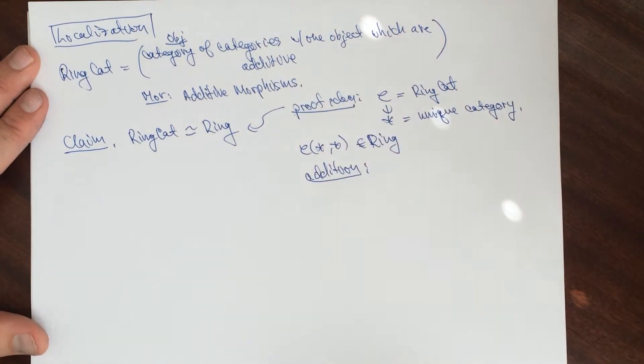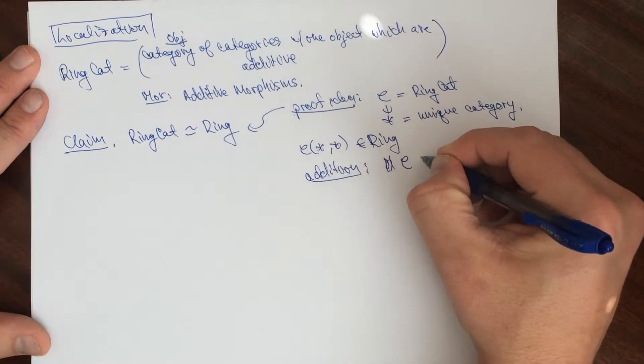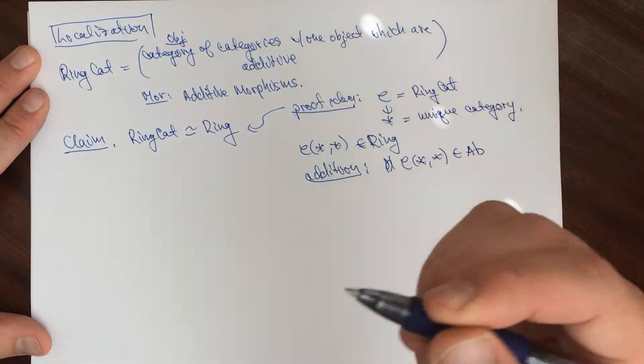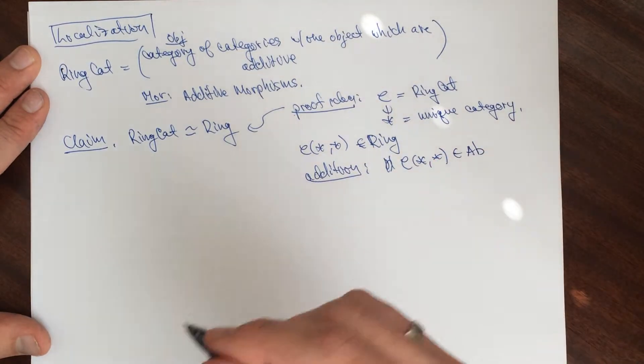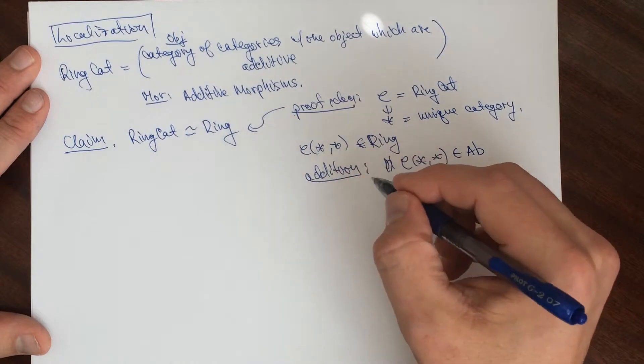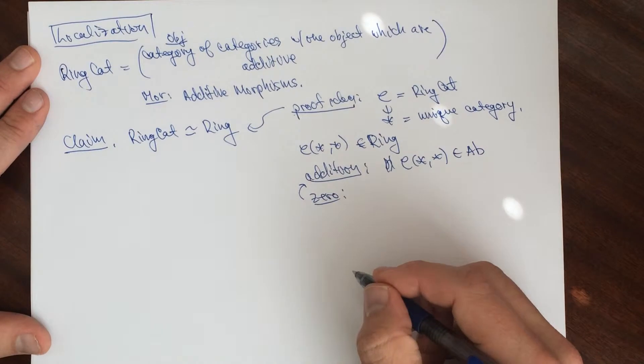The addition here comes from the fact that HOM, or that this thing here, is in the abelian groups. Because I said it's an additive category. HOM is enriched in abelian groups. So this has an addition. The zero object. The zero comes from here.